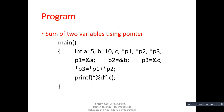This is a program which computes the sum of two variables using pointers. We have three variables a, b, and c, and three pointers p1, p2, and p3. We assign the address of a into p1, address of b into p2, and address of c into p3. So *p1 means we are accessing the value of a, *p2 means we are accessing the value of b. If we assign the addition of *p1 and *p2 into *p3, it means we are assigning the result inside c. So if we print c, it will print the addition of a plus b, which equals 15.